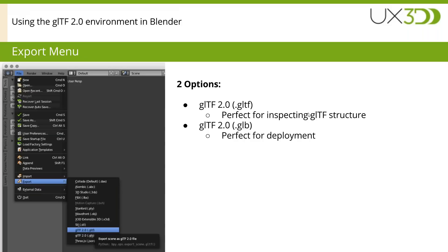Once successfully installed, you have two possibilities: export as a GLTF file with a separate binary file and PNG files — giving you a bundle of files — or export as GLB, which is a single binary file better for deployment. However, with large textures, the GLB exporter can take quite a long time because PNG encoding happens in Python. We're in discussion with the Blender community to have this implemented natively in the future.